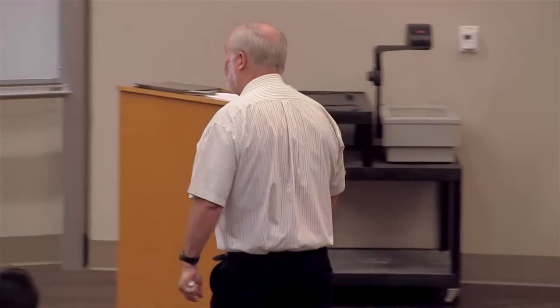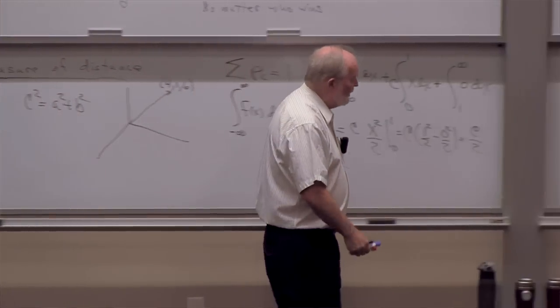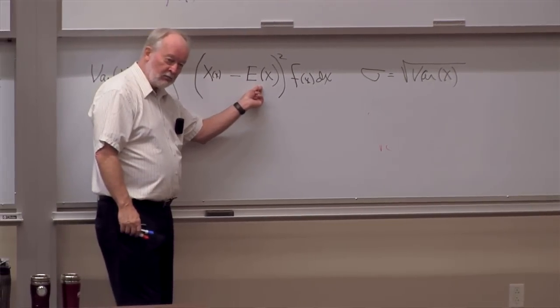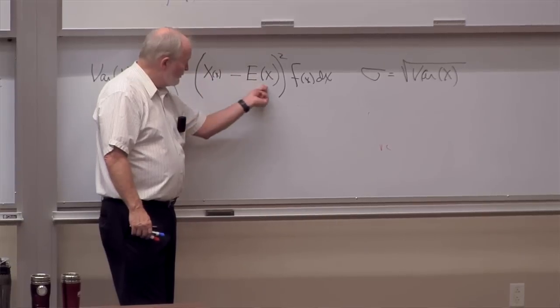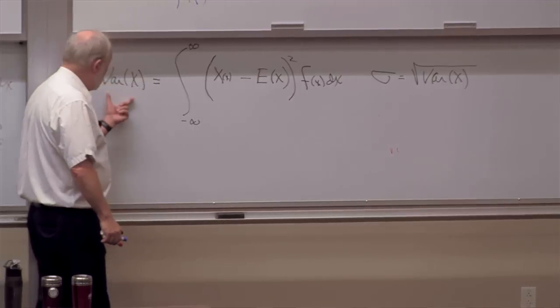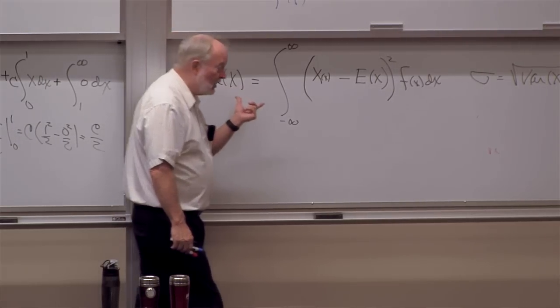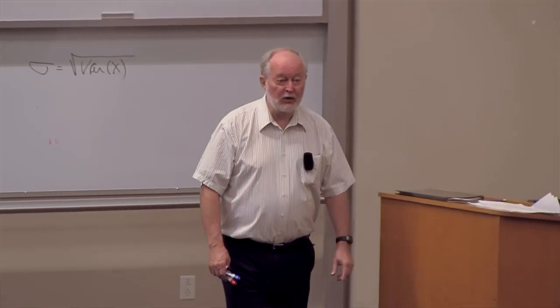Nothing mysterious about this at all. We simply need a unit for measurement — kilometers or miles or something. We invent one using the Pythagorean theorem A² + B² = C². The expected value is our base point. We measure how data goes in one direction from that point, square it, sum over all possibilities weighted by probability, and get the variance. The square root gives the standard deviation.